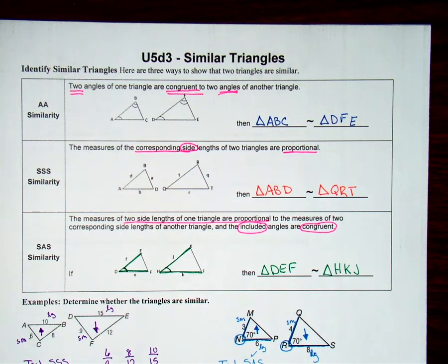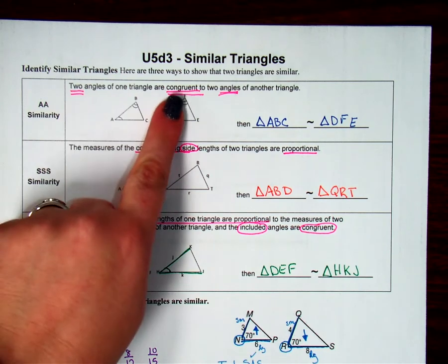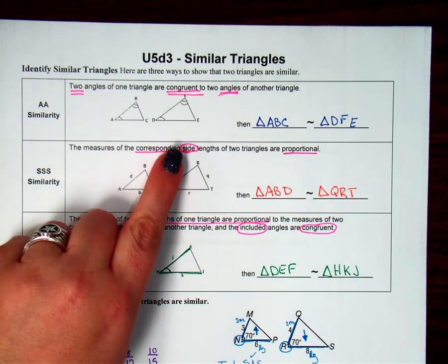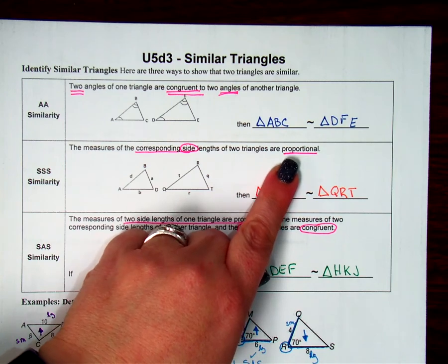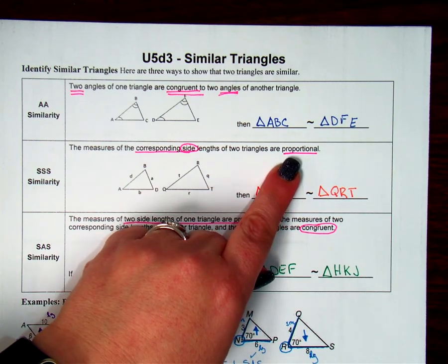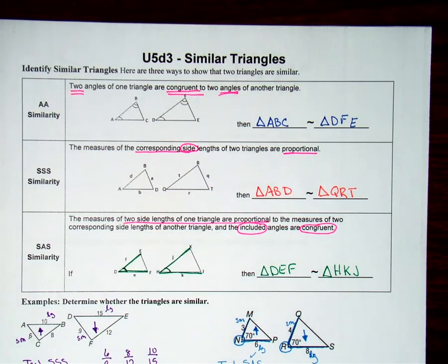Welcome back! In this next video, we are going to keep working with our similarity theorems and postulates: angle-angle, side-side-side, and side-angle-side similarity. Remember, with angles they're always going to be congruent, and with sides they're always going to be proportional. So we're going to set up fractions and make sure they reduce to the same ratios.